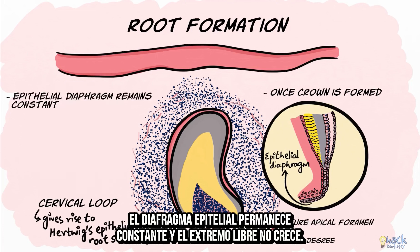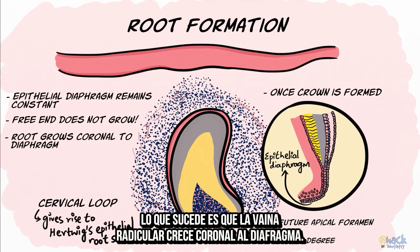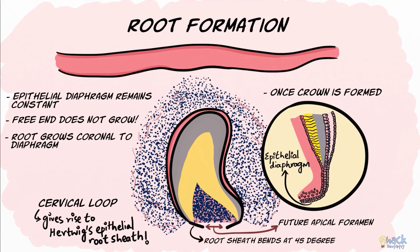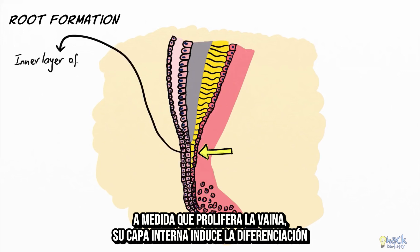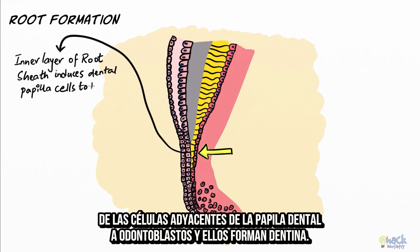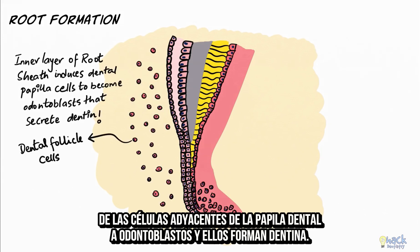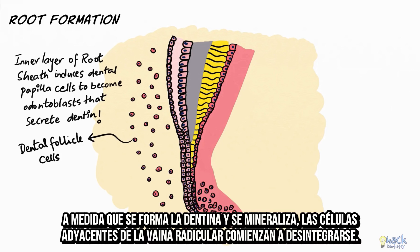The epithelial diaphragm remains constant and the free end of the diaphragm does not grow. Rather, the root sheath continues to grow coronal to the diaphragm. As the root sheath proliferates, the inner layer of the root sheath induces the differentiation of adjacent dental papilla cells to odontoblasts, and these odontoblasts begin to form dentine. As dentine is formed and mineralizing, the adjacent root sheath cells start to disintegrate.